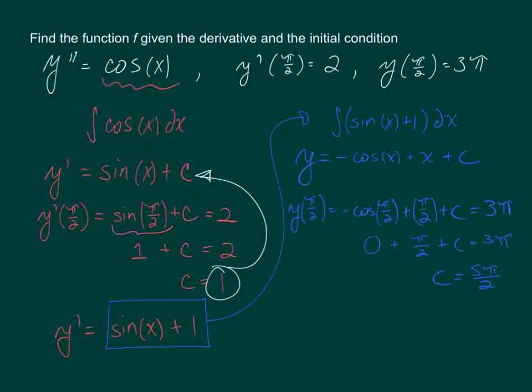And again we cannot just stop here. Now we found a specific C value, yes, but we're trying to find a function. So this C value needs to get substituted back up into the original function. So we'll have a final answer of y equals negative cosine of x plus x plus 5 pi over 2. And there's your answer for the initial condition exercise.